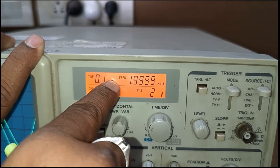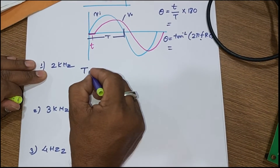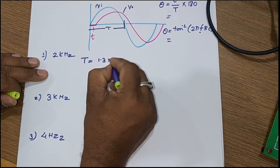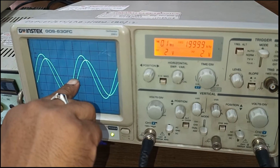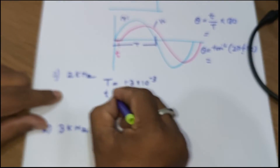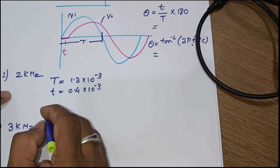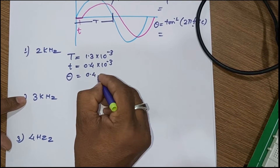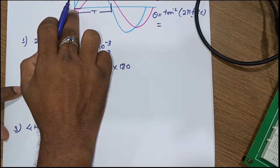For 2 kilohertz, capital T is 1.3 × 0.1 millisecond, that is 1.3 × 10⁻³ seconds. The small t is 0.4 × 0.1 millisecond, that is 0.4 × 10⁻³ seconds. So the observed theta equals small t divided by capital T into 180, which is 0.4 × 10⁻³ divided by 1.3 × 10⁻³ into 180.